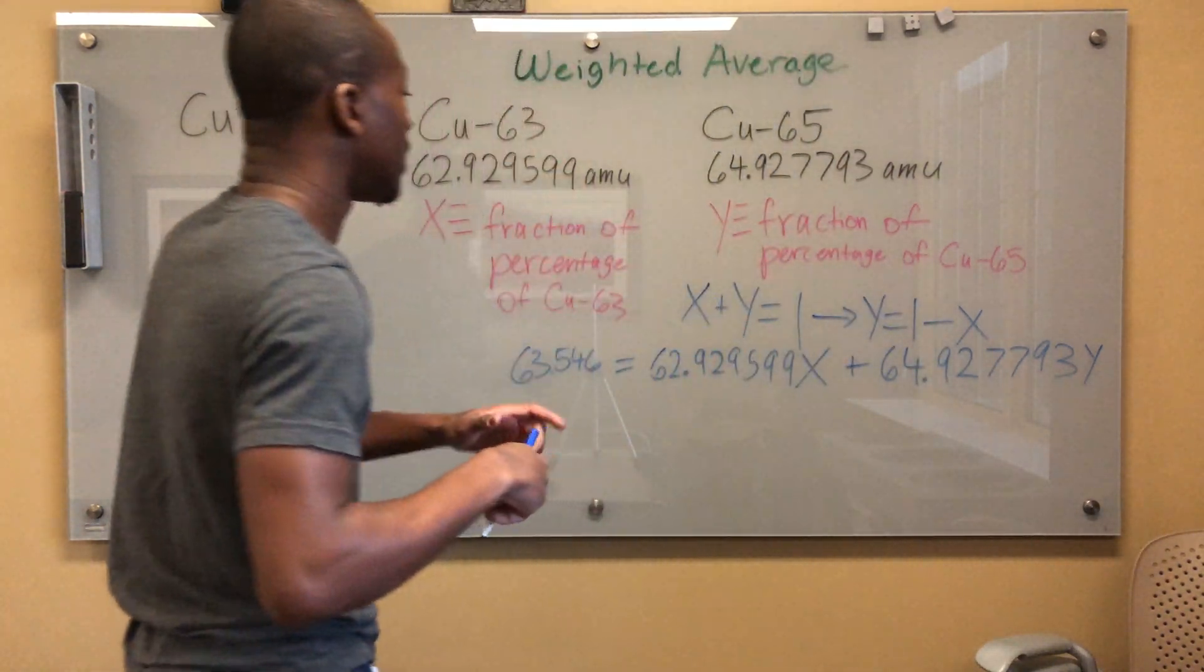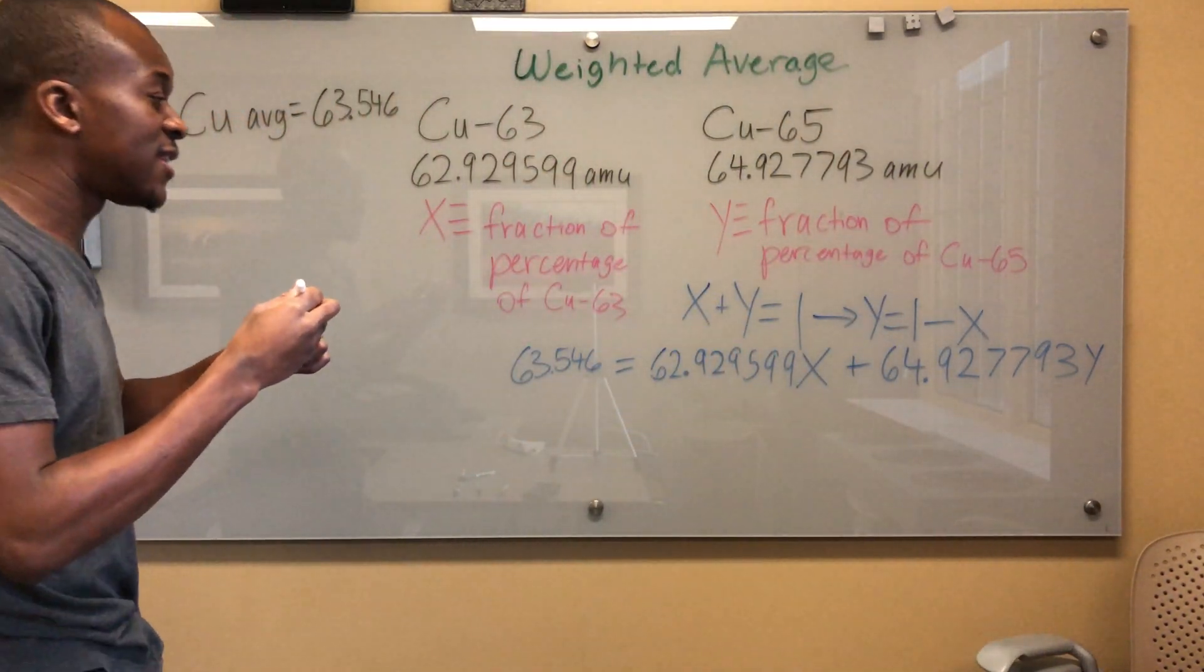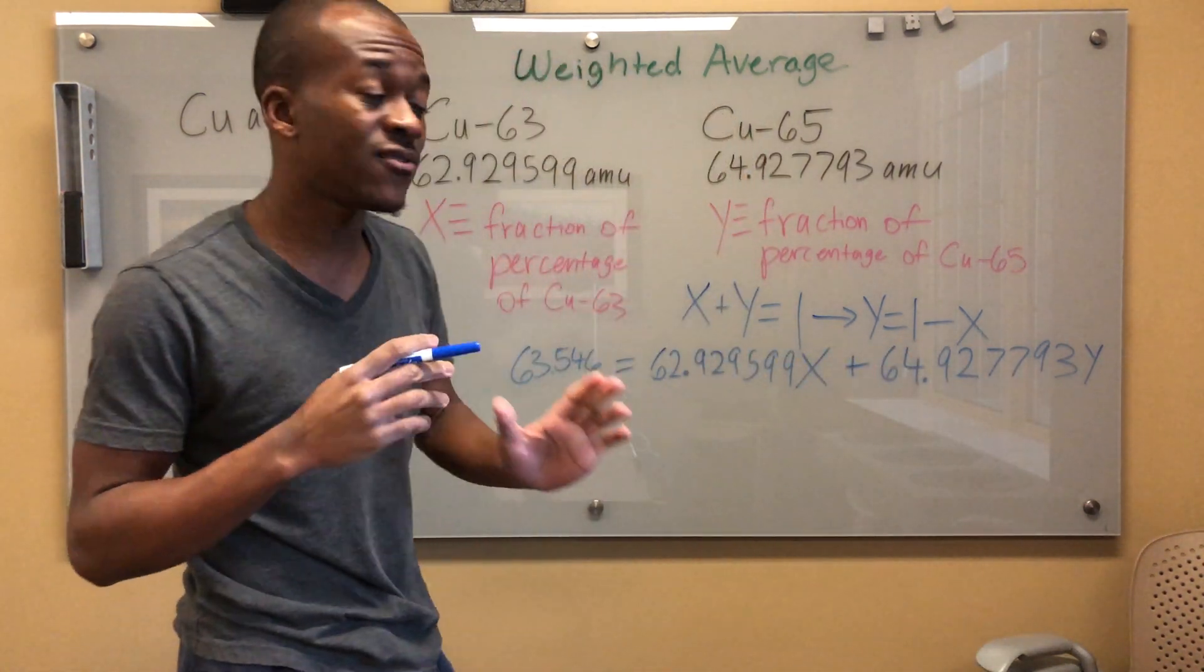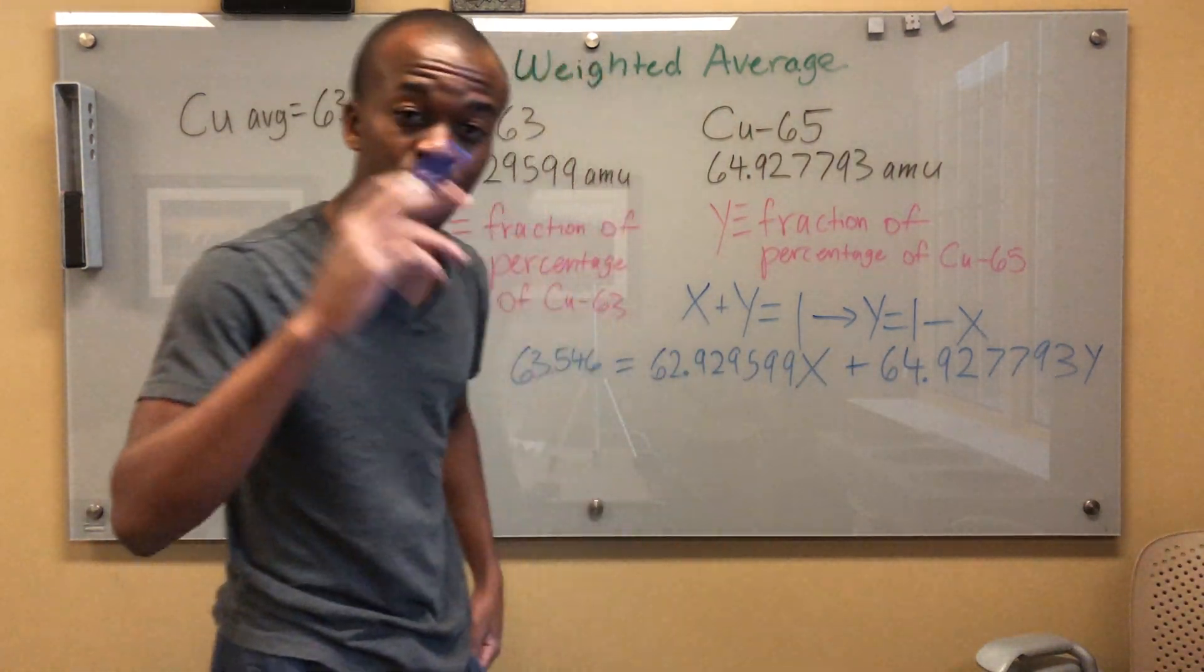So now, 1 minus X. And then I can go ahead and substitute this in for Y and replace every Y that I see, which is only one, as 1 minus X.